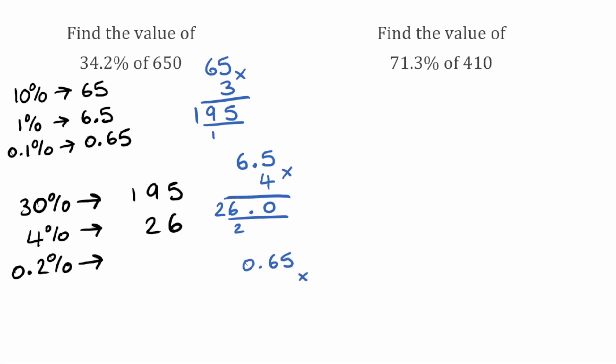Multiplying 0.65 by 2: 2 times 5 is 10, so 0 carry 1; 2 times 6 is 12, add 1 is 13, so 3 carry 1; 2 times 0 is 0, add 1 is 1. So our 0.2% is equal to 1.3.